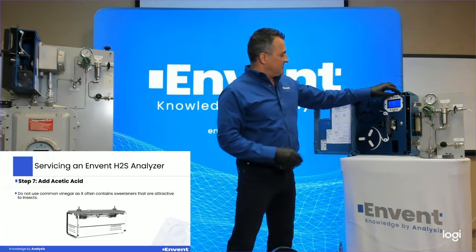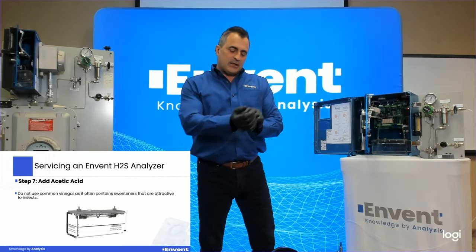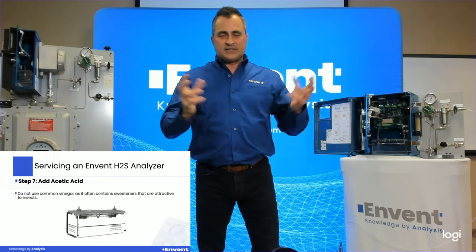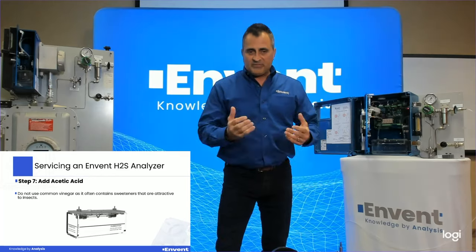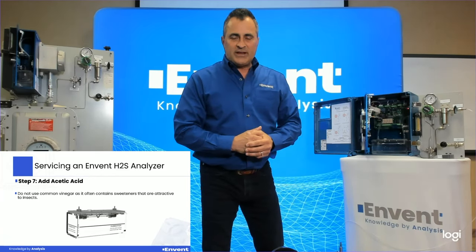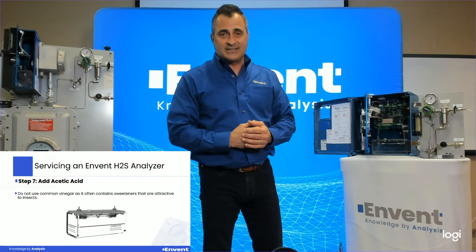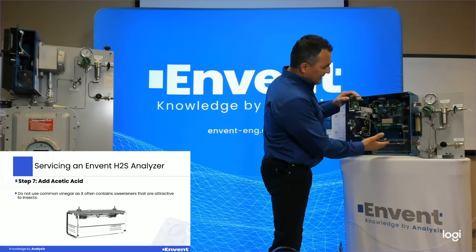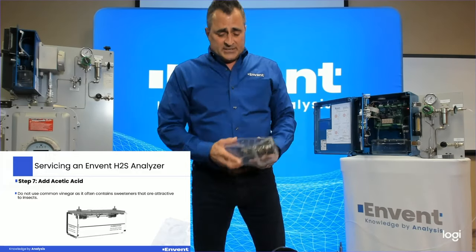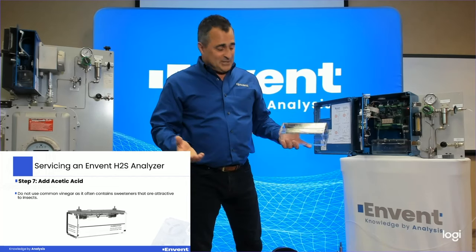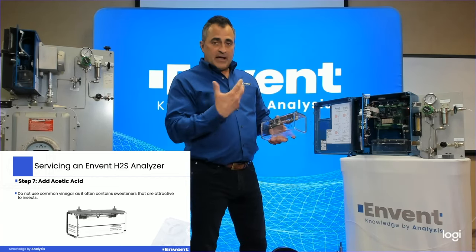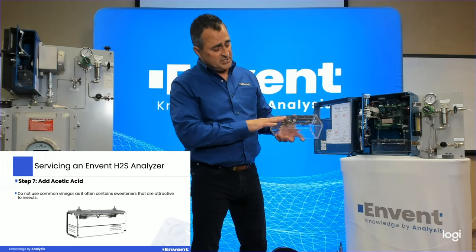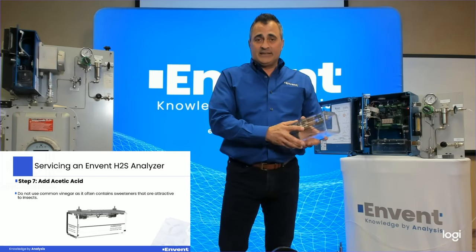The next thing we do is add acetic acid to the humidifier. We do not recommend using standard vinegar, which is 5% acetic acid — vinegar is sweetened for human consumption and that sweetener attracts insects to the device. We provide acetic acid with no sweeteners. Fill the humidifier to the line if you choose, but make sure there is some in there — it's evaporating constantly. If you're not going to visit for quite a while, you can fill above the line, but don't submerge your permeation tube or fittings in the acetic acid.